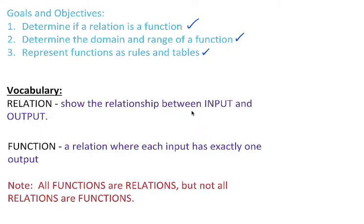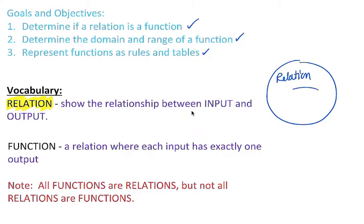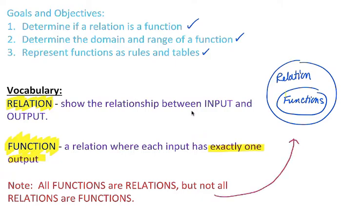First, let's review the vocabulary. A relationship is just a relationship between inputs and outputs — anything can be a relation. So if we think of this in terms of a diagram, a relation is a set of all relationships between inputs and outputs, and only some relations are functions. Functions are specifically the relations where each input has exactly one output. All functions are relations, but not all relations are functions.